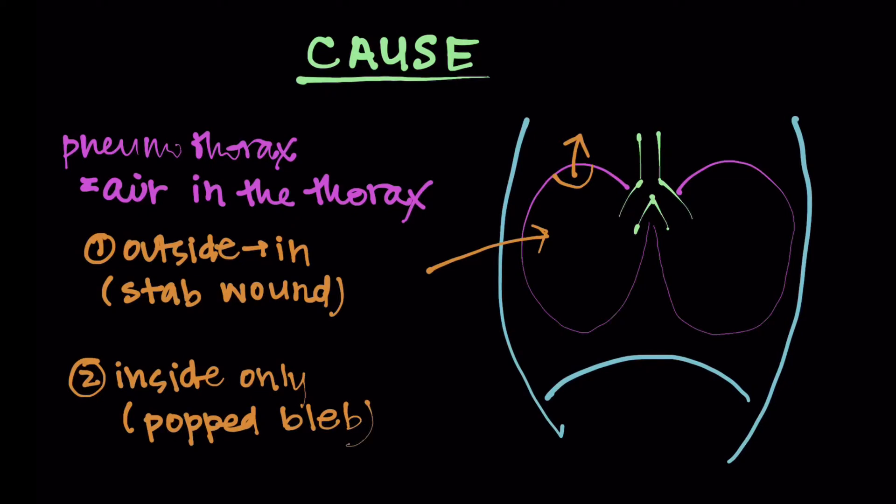Alright, and so you've got to remember from your basic physiology lectures the pressure. So you've got atmospheric pressure in your lung. Obviously, atmospheric pressure is outside. But when you create this hole, this stab wound, for example, or this bleb popping, the pressure inside the chest becomes atmospheric too. And remember, it's supposed to be that negative pleural pressure. So the lung wants to collapse down, and the chest wall wants to go out.